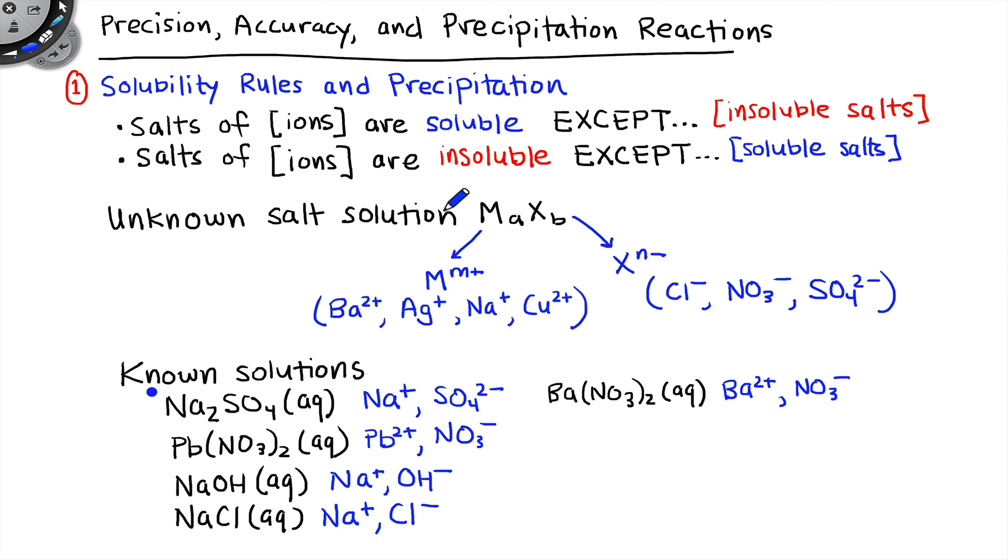By combining our unknown salt solution with each of these, observing what happens, and mapping our observations onto the solubility rules, we can narrow down logically the possibilities until only one makes logical sense based on our observations. And that's the goal of part A to identify the unknown salt based on the observations of precipitation or not using these known solutions.